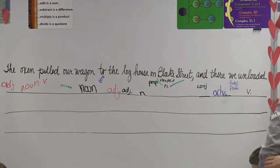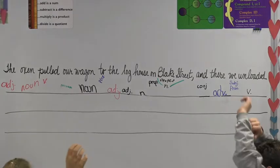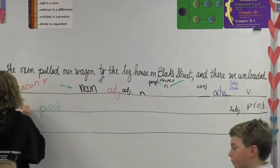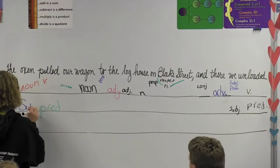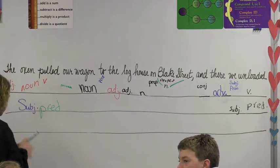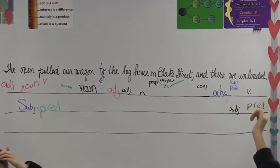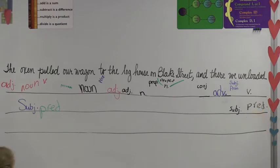Let's go to the second round. We're looking for subjects and predicates. Okay. We have one set over there. We unloaded as a subject predicate set. And on the other side, oxen pulled is a subject predicate. Pulled. Is it an action or a linking verb? Action. So it's an action verb.